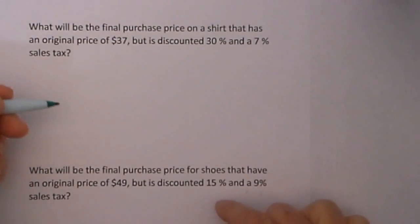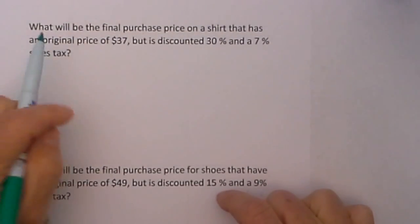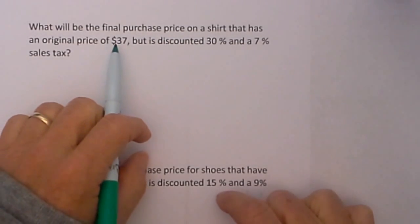Let's look at some examples. Let's go ahead and work this example of finding the final purchase price. We have what will be the final purchase price on a shirt that has an original price of $37 but is discounted 30% and has a 7% sales tax.